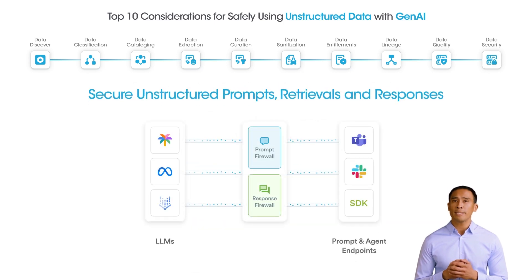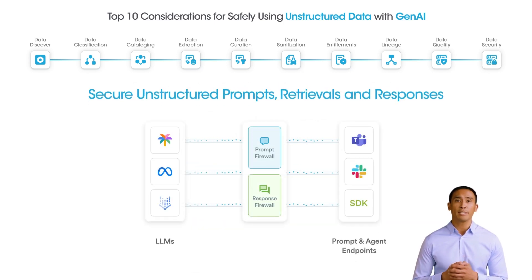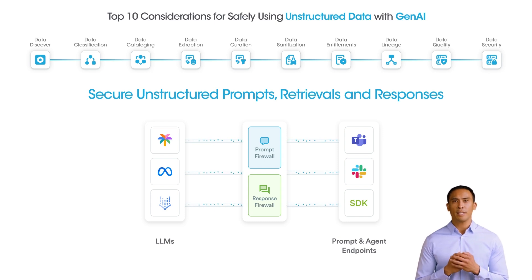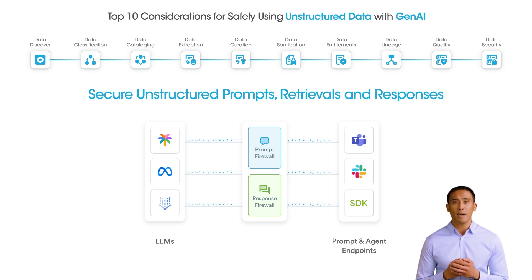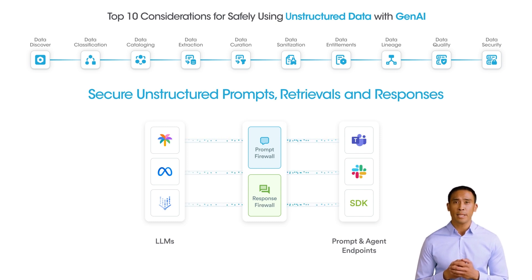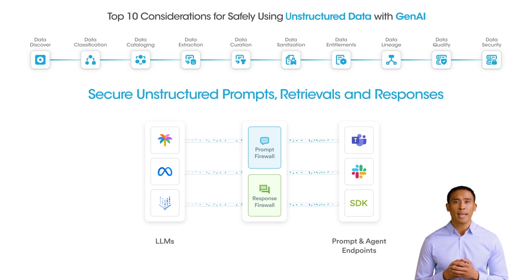Gen AI bots and agents are vulnerable to malicious use and attacks. Businesses should use custom and pre-configured policies to prevent data leaks, prompt injections, and harmful content. Technologies like context-aware LLM firewalls can protect prompts, retrievals, and responses.